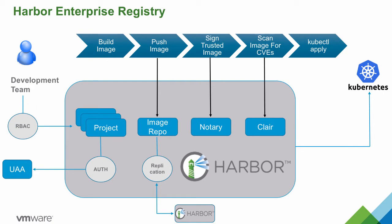Harbor is integrated with open-source project Clair to provide vulnerability scanning of images. When vulnerability scanning is enabled, data is regularly imported from a known set of sources and correlated with the indexed contents of images in order to produce lists of vulnerabilities that threaten containers created from the images. Scanning can be done at image upload and at defined times during the day. Harbor can restrict access to vulnerable images. Kubernetes applications deployed on clusters created through PKS receive the benefits of image signing and vulnerability scanning enabled through Harbor without any additional configuration.